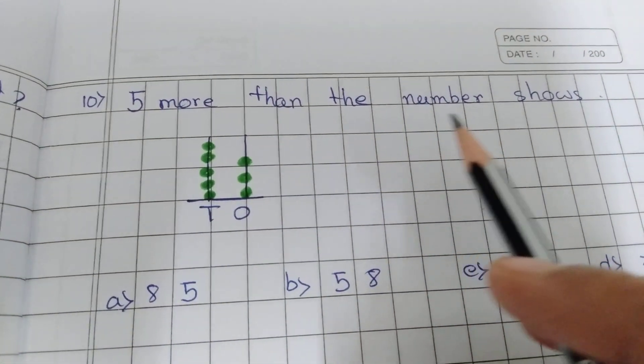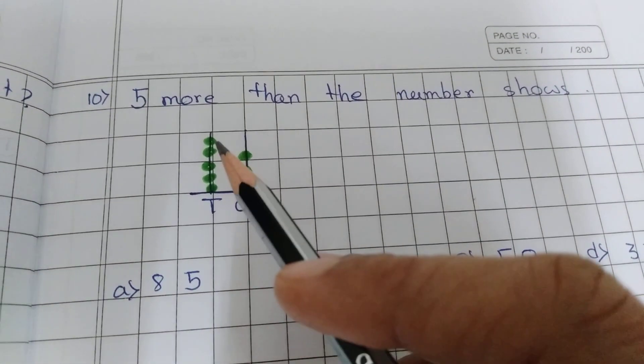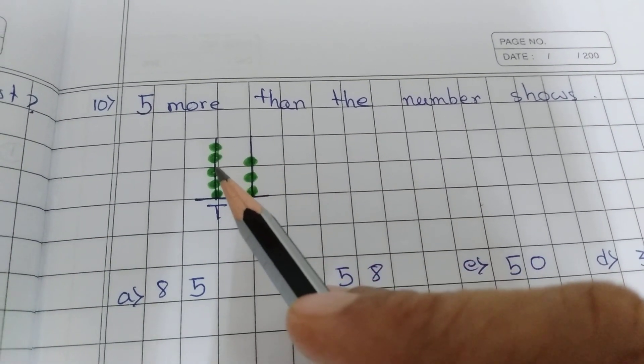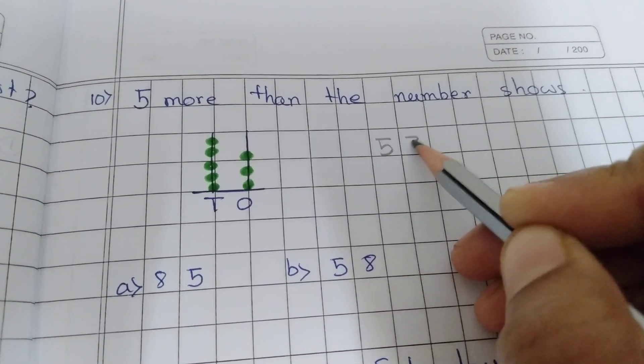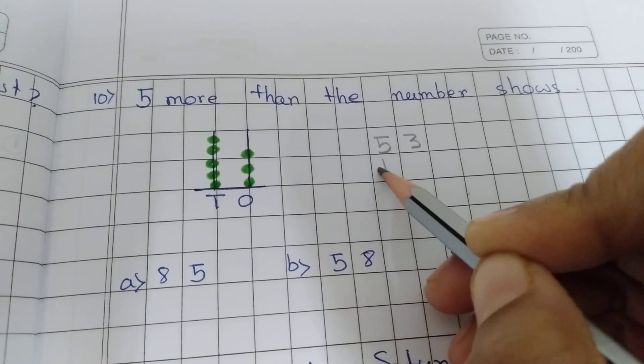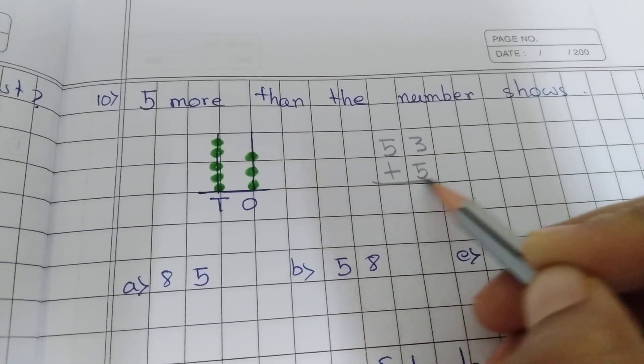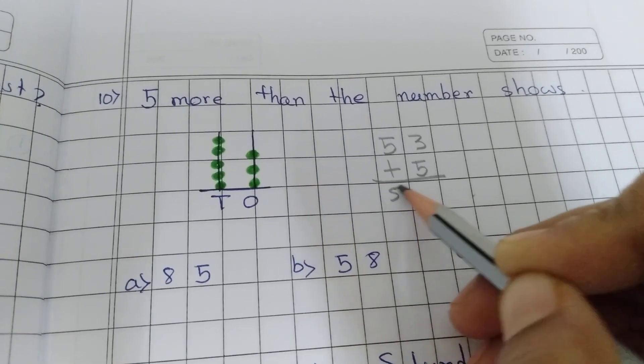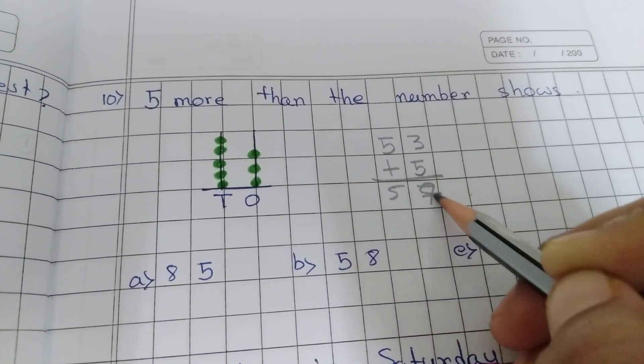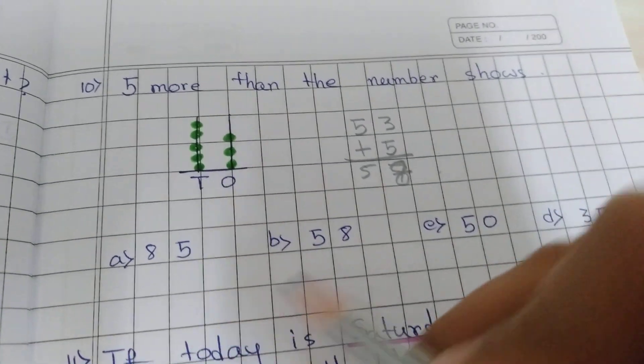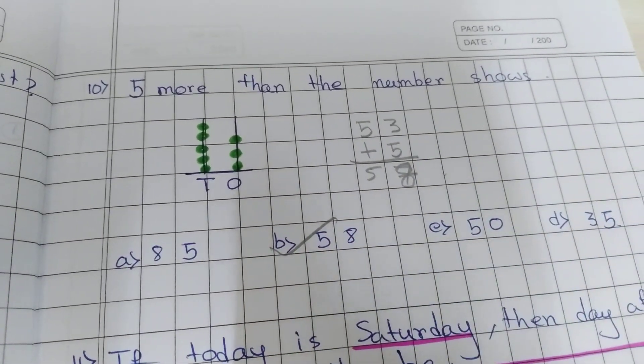5 more than the number shown. Number is showing 1, 2, 3, 4, 5, 5, 3, 53 plus 5. 5 more than the number shown, that means it will be 57, sorry 58. Option B is correct, 58.